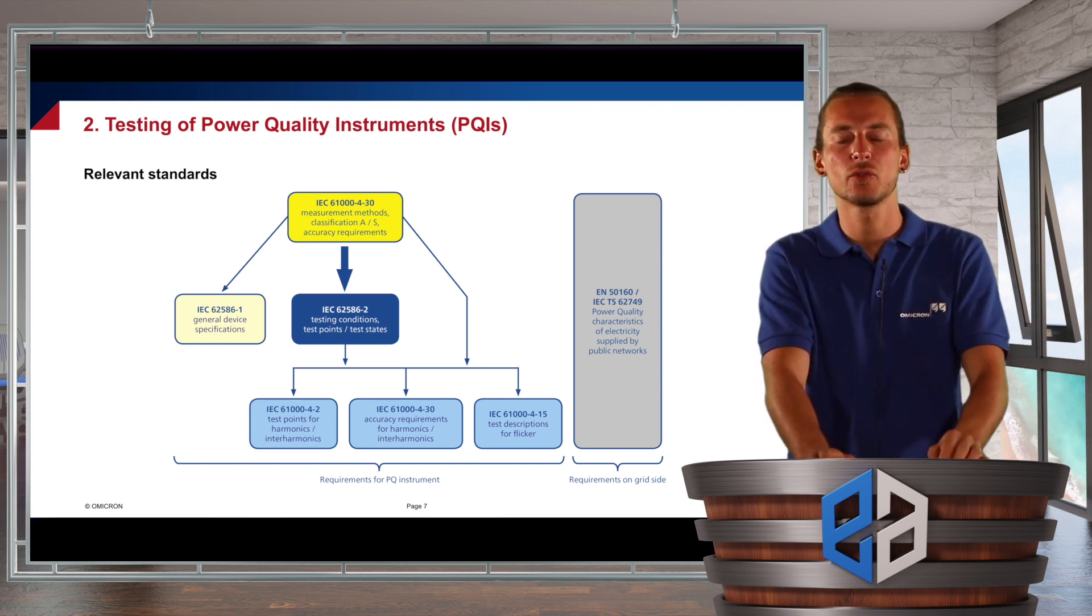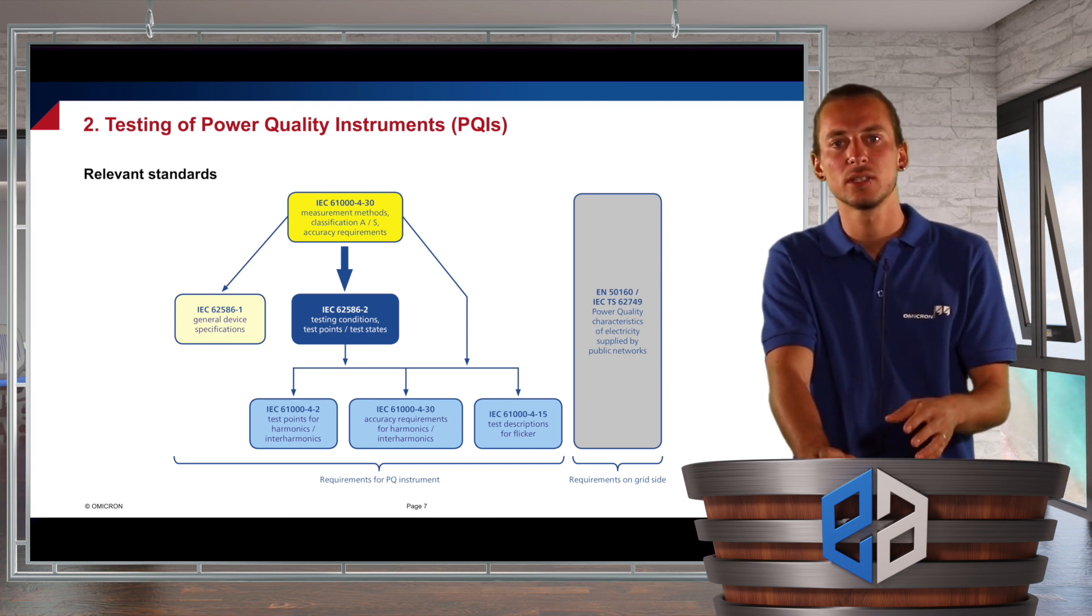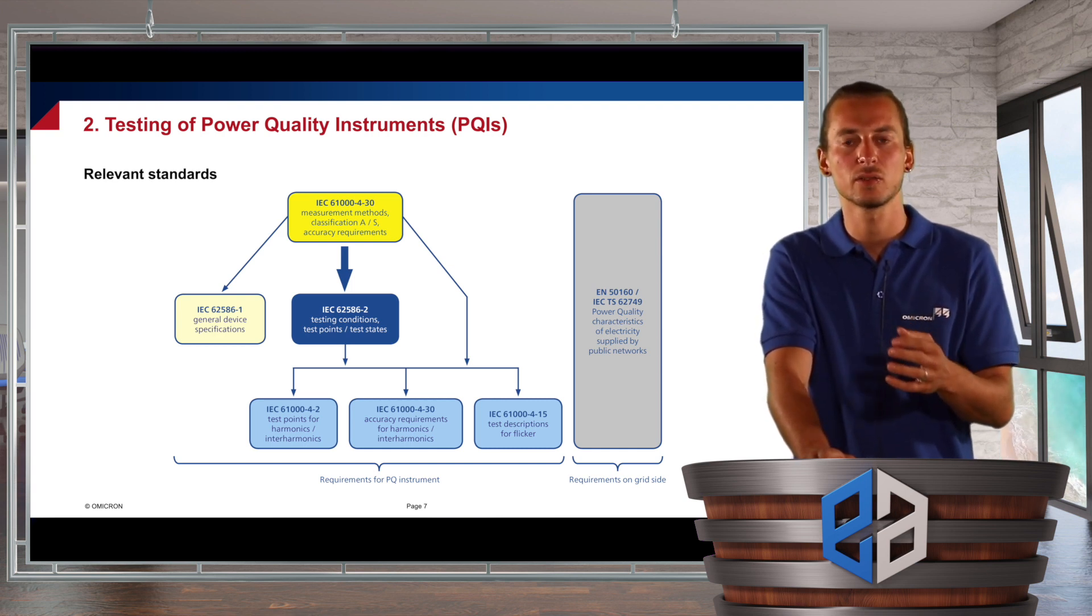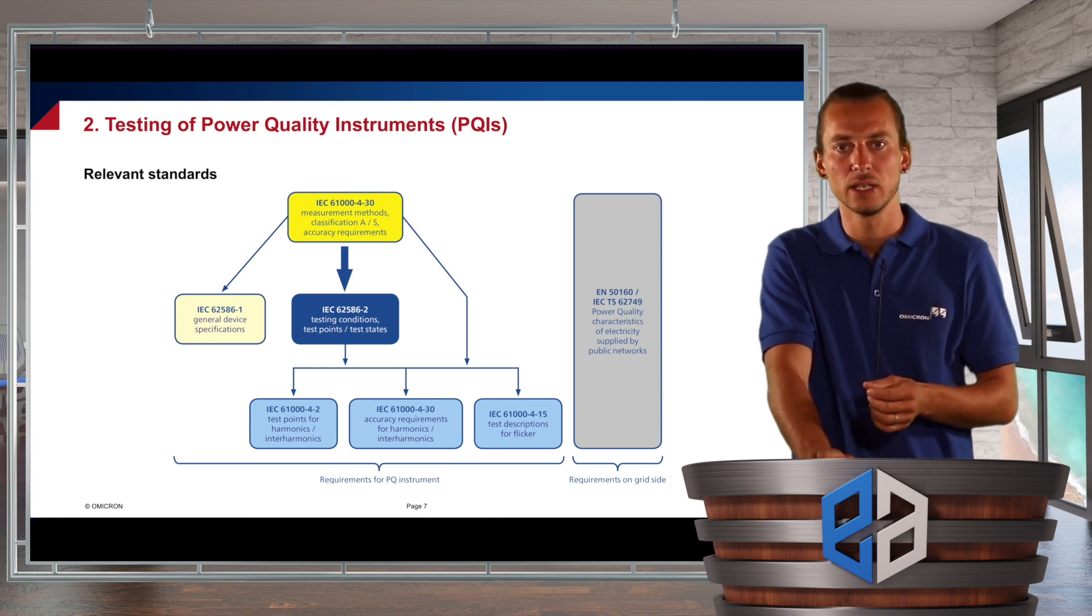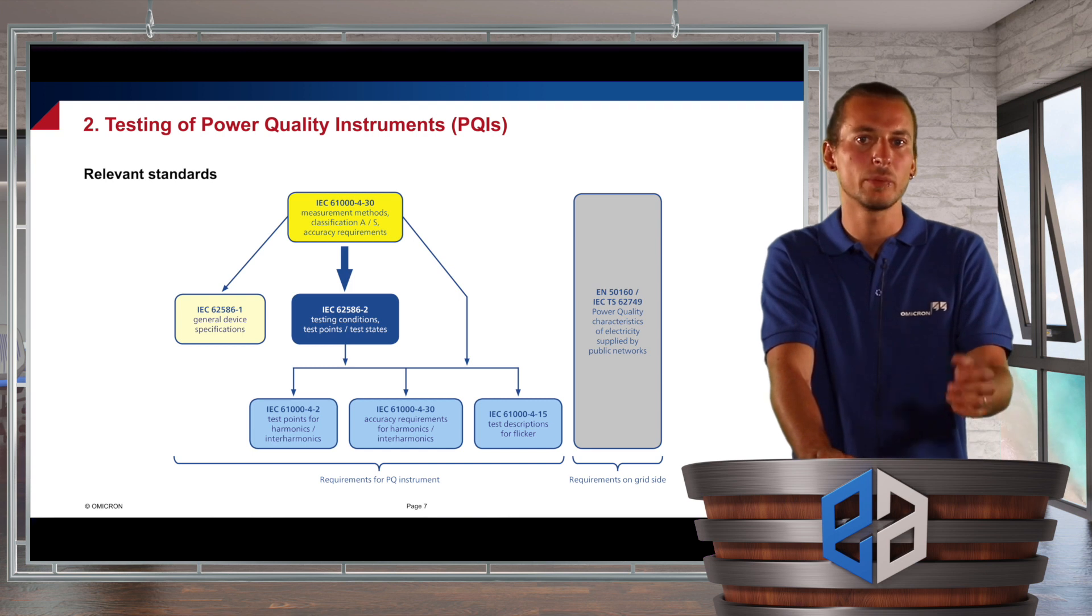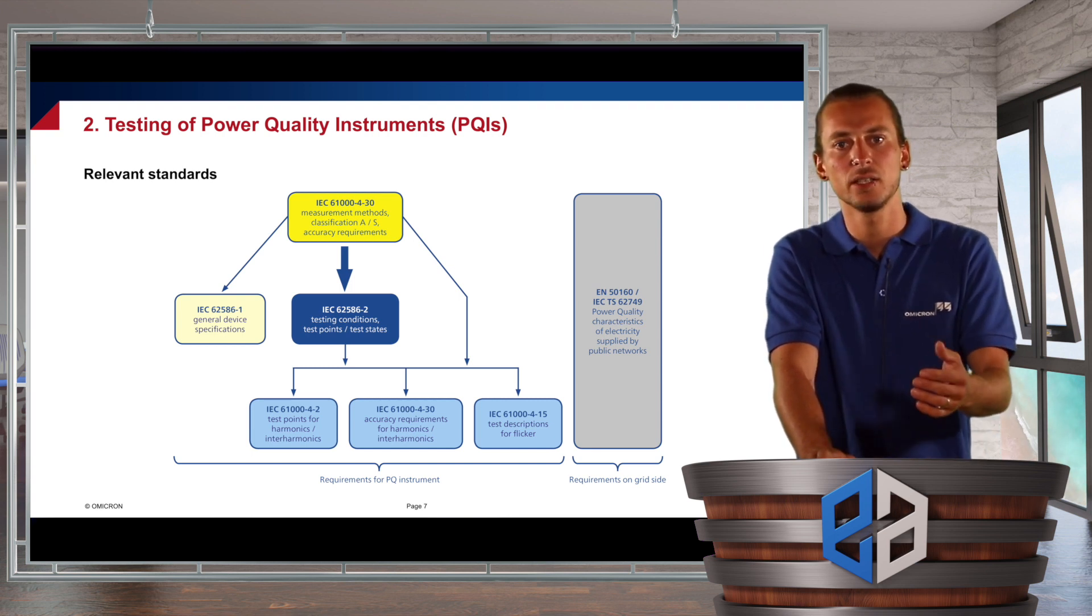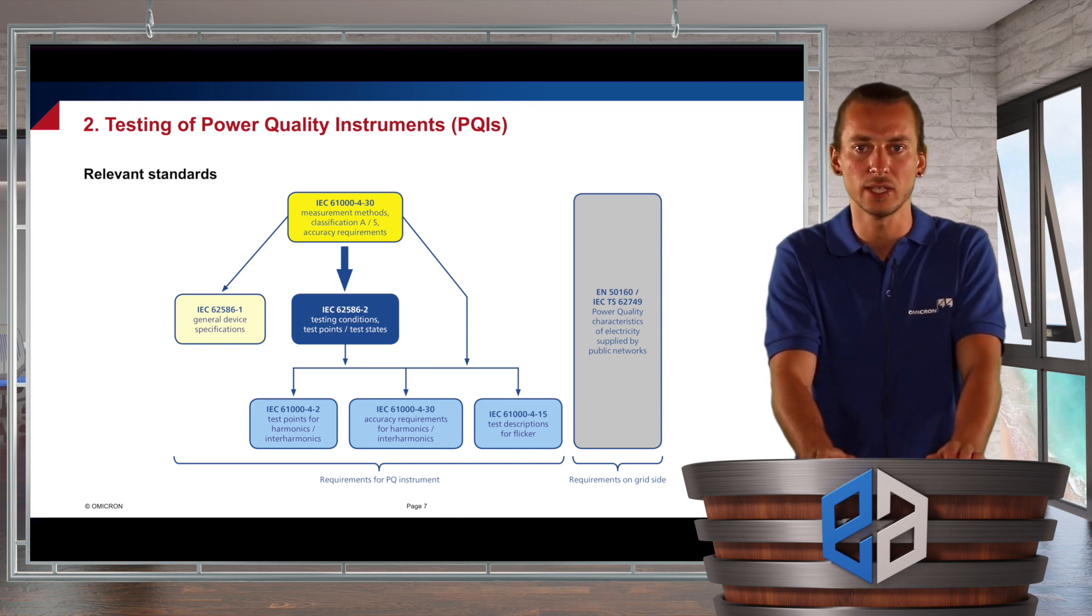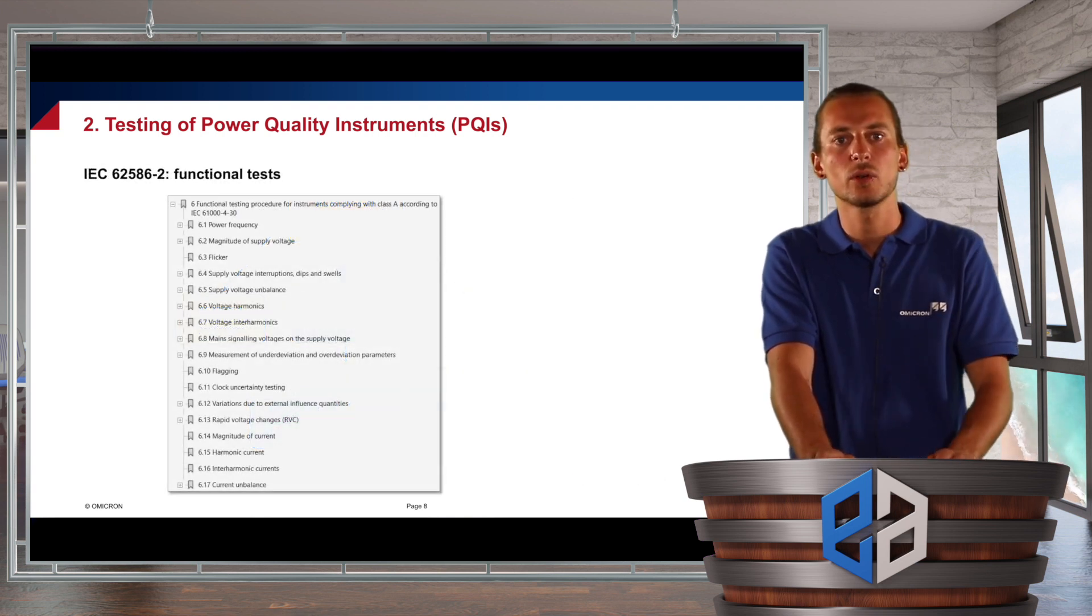All of these standards are just related to the power quality instrument, so they are on the product side. On the other side, from point of view of the grid operators, we have a standard that defines power quality criteria that have to be met for the power that is supplied from the grid. For the European area, it is the EN 5160, but there are also international standards available.